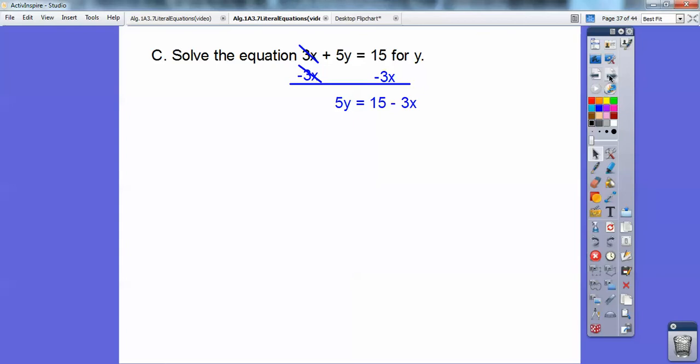We're going to solve for y, so 5 times y is 5y, so we're going to divide both sides by 5, and I get y equals 15 minus 3x all over 5. A real common error is kids want to cancel out that 15 and that 5. You can't do that, you guys.